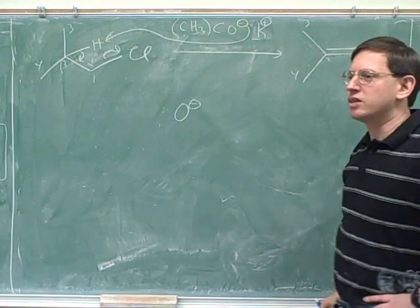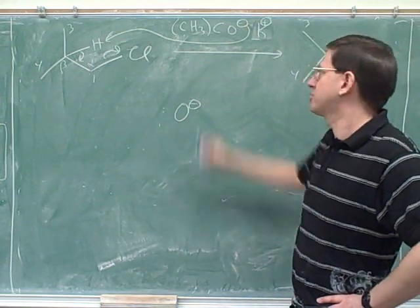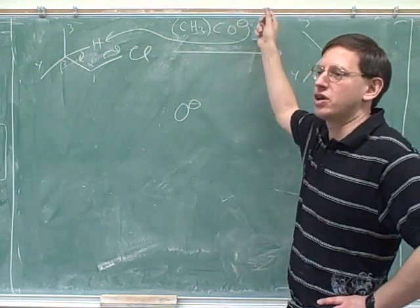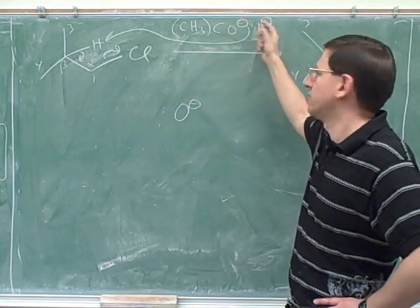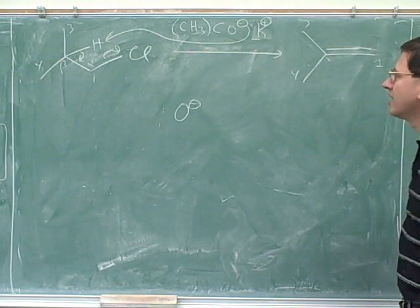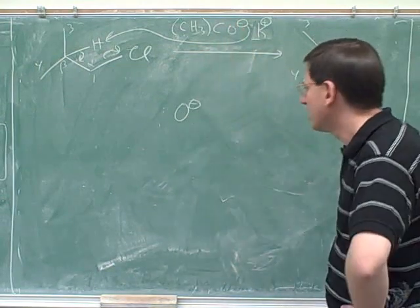I think we'd get full credit either way, but maybe it's a little safer to show the counter ion. In reality, we don't take something off the shelf that's charged. Everything on our shelf is neutral, so there's always going to be a counter ion. So it's safest to show this counter ion. This could be either sodium or potassium. But they did use tert-butyl oxide. Good.